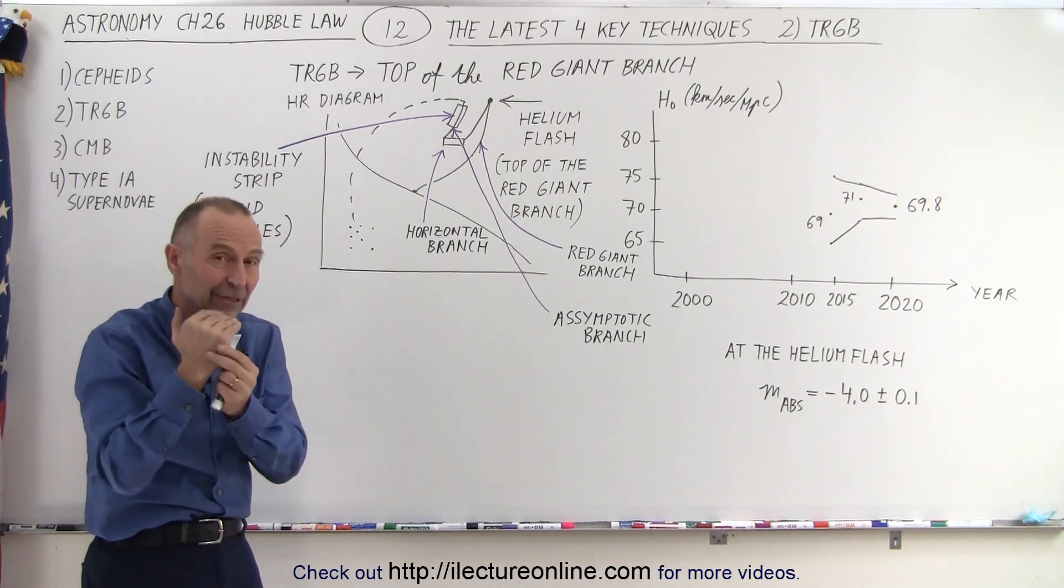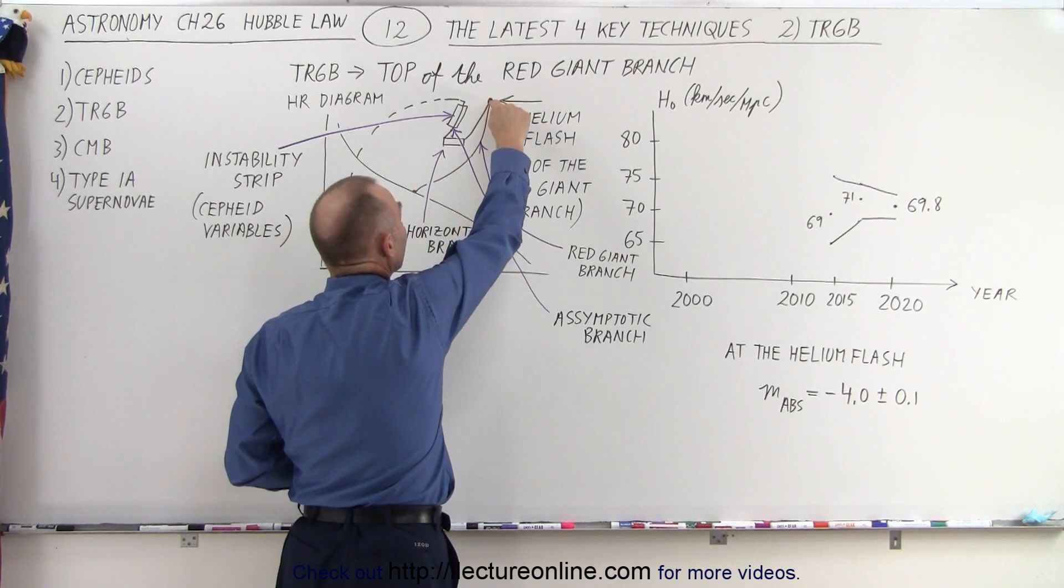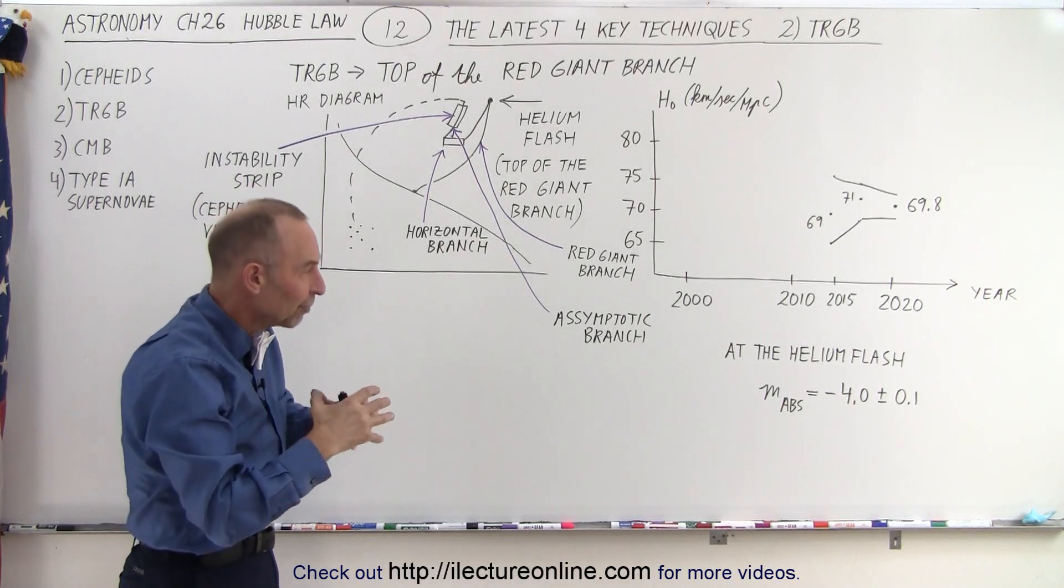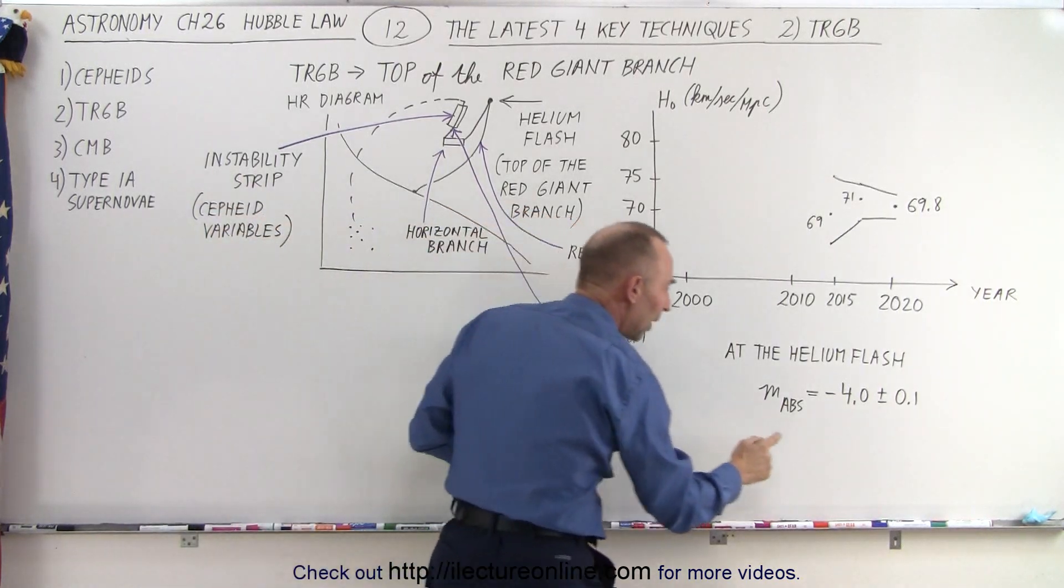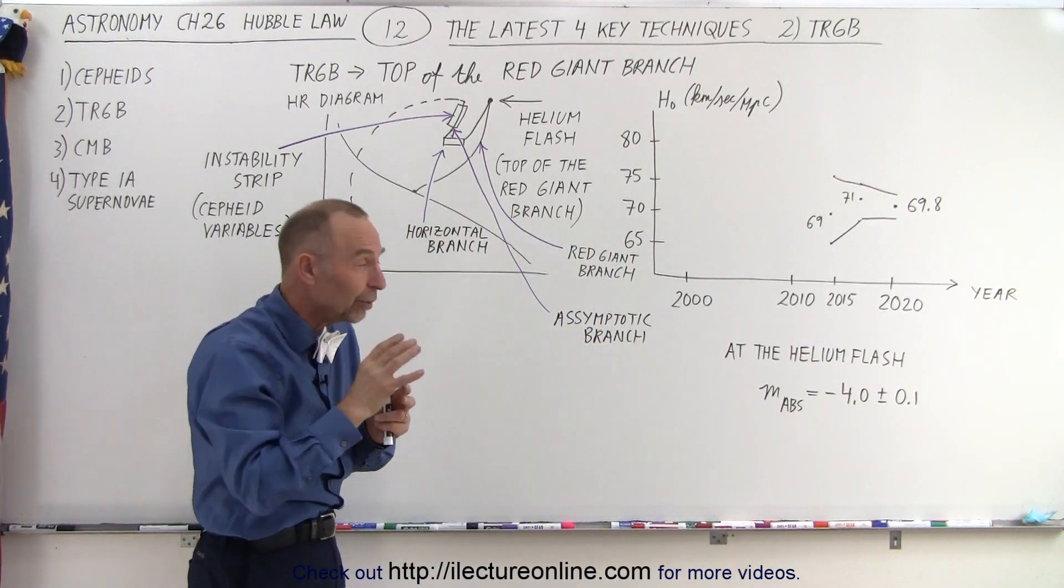That happens at a very particular moment in the star's life as it's moving up the red giant branch. When it's at the very top and the helium flash occurs, the magnitude of the brightness of the star is right around a minus 4.0, plus or minus about 0.1, 0.05.